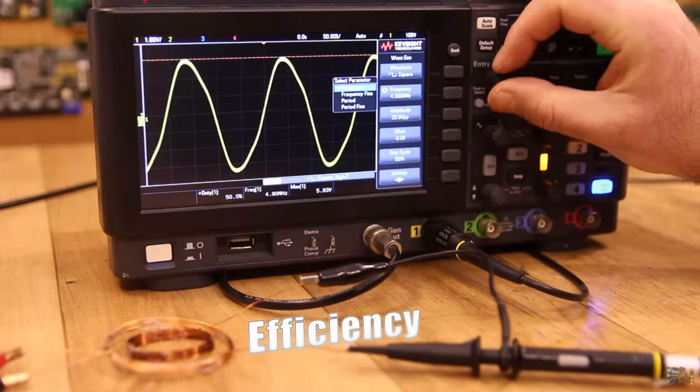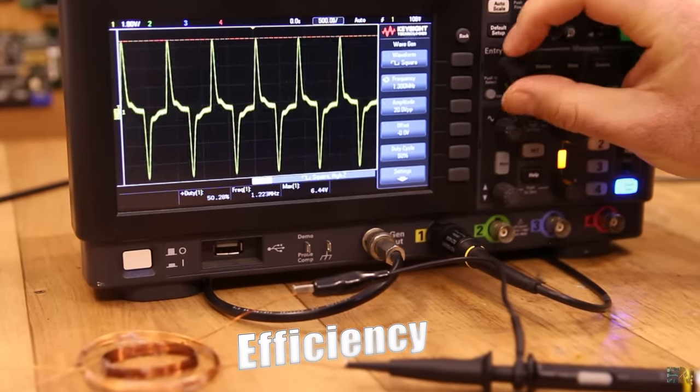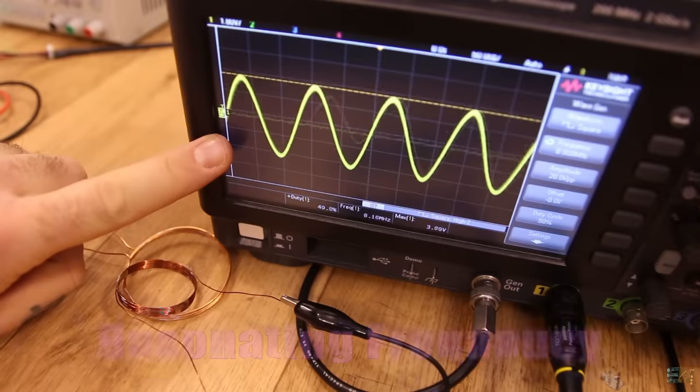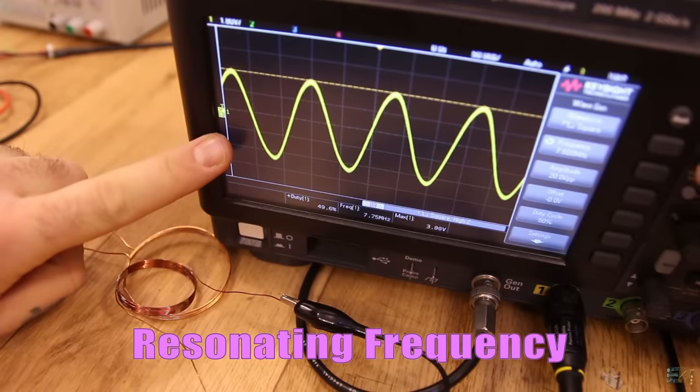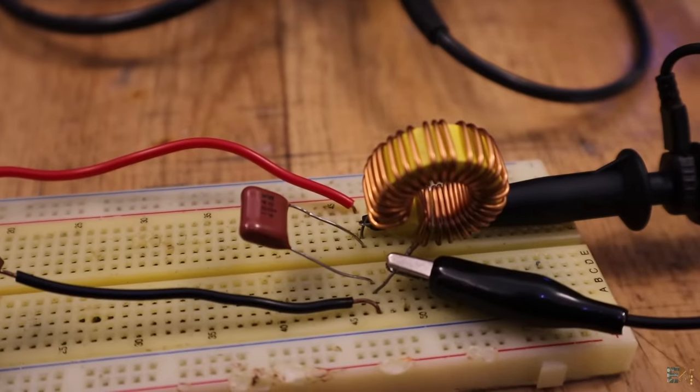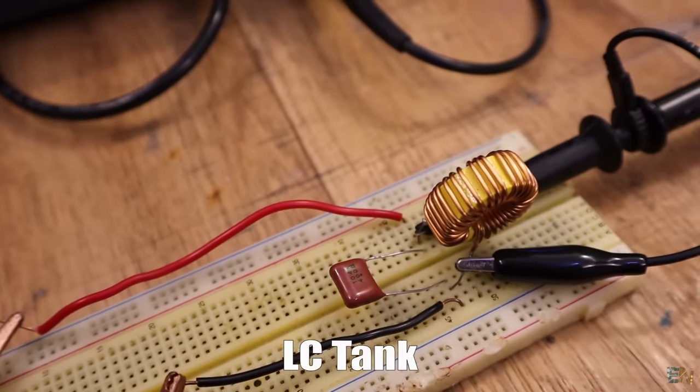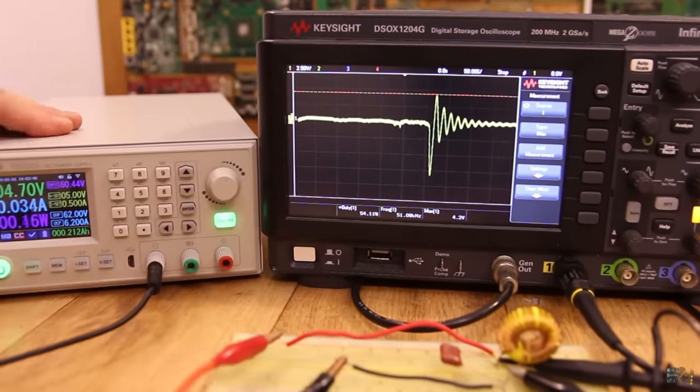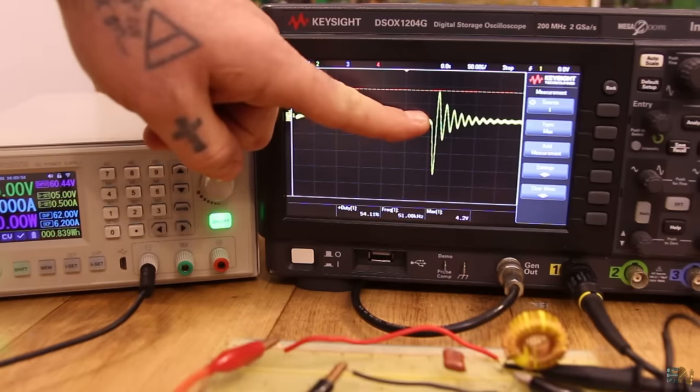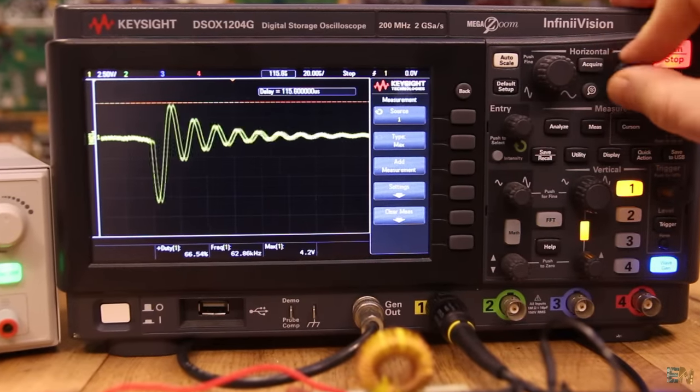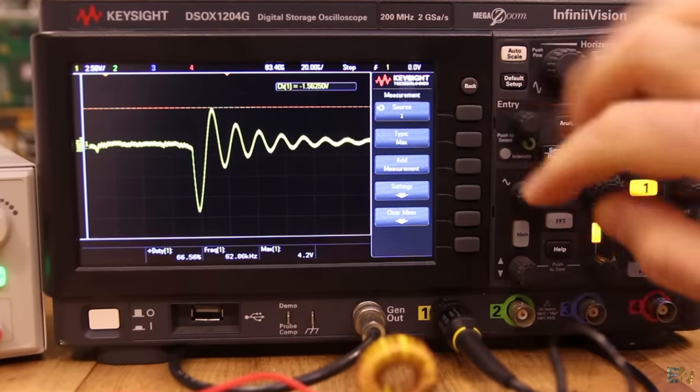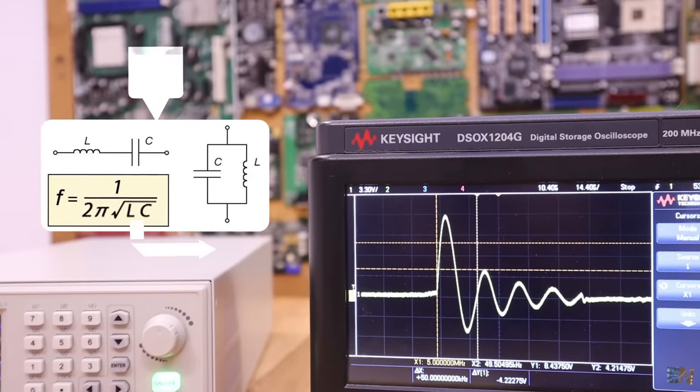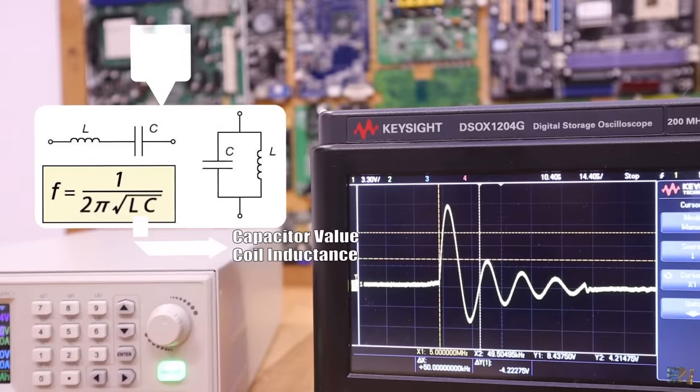Another thing to have in mind is the efficiency and that is affected by the signal frequency as well. For the test before, I was switching the coil at a random frequency. But for the best couple between the coils, we need to oscillate it at the resonating frequency. So what is this resonating frequency? Well, here I have a coil connected to a capacitor in parallel. This creates a so-called LC tank. I connect 5V to the terminals so the capacitor will charge up. But look what happens when I release the 5V. We get these oscillations. The frequency of these oscillations is affected by the coil inductance and capacitor value. This is the resonance frequency of this LC tank. This frequency is given by this formula. So if we know the capacitor value and the coil inductance, we can calculate the resonating frequency.